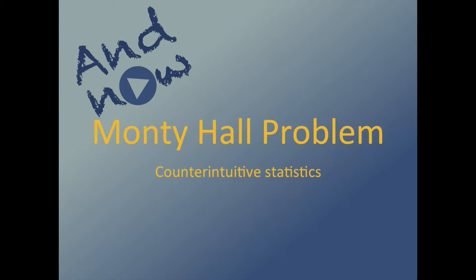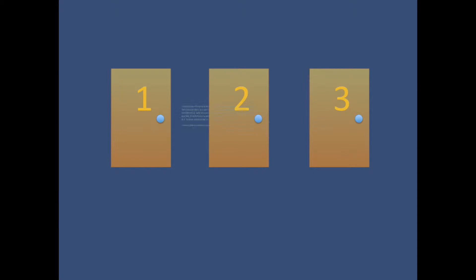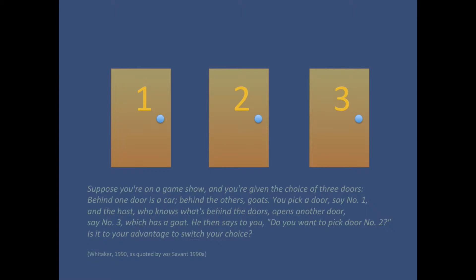The Monty Hall problem. And now, maths. Here is a classic example of counter-intuitive statistics. Suppose you're on a game show and you're given the choice of three doors. Behind one door is a car, behind the others, goats.